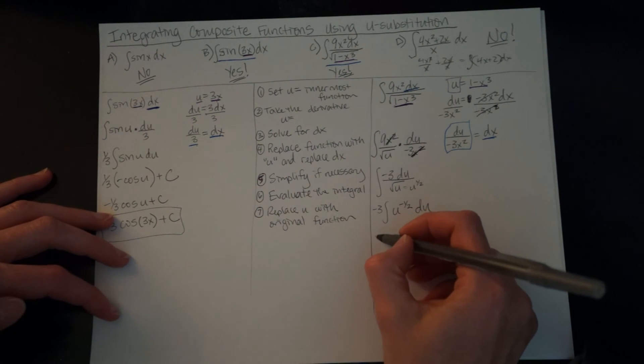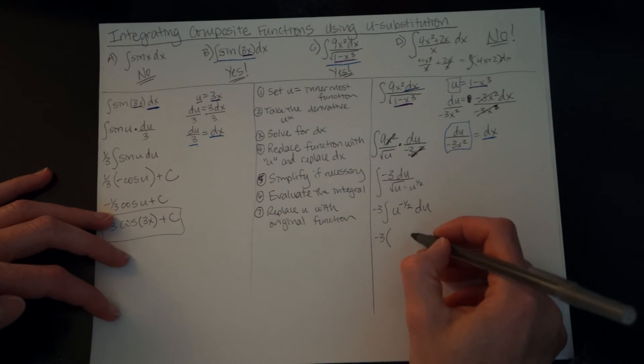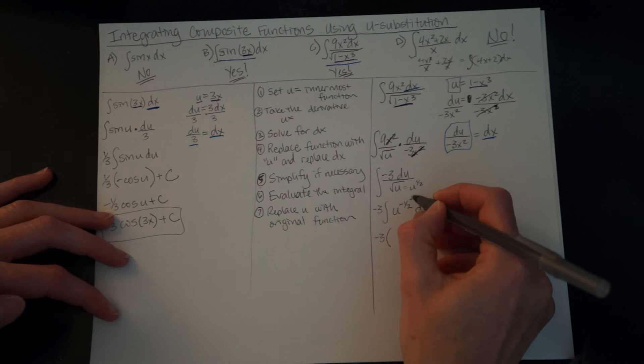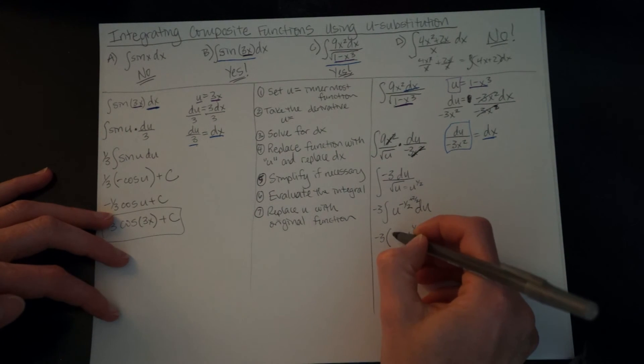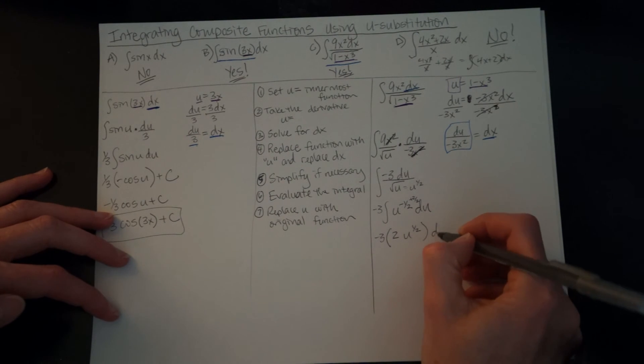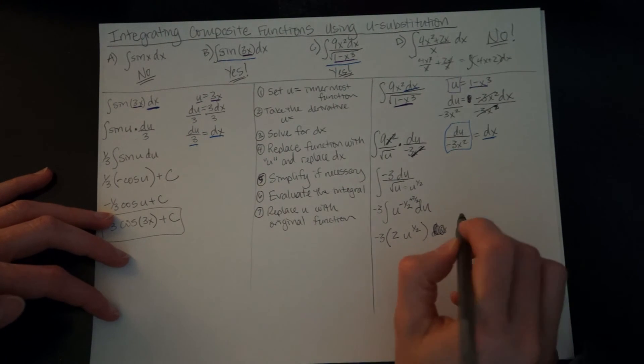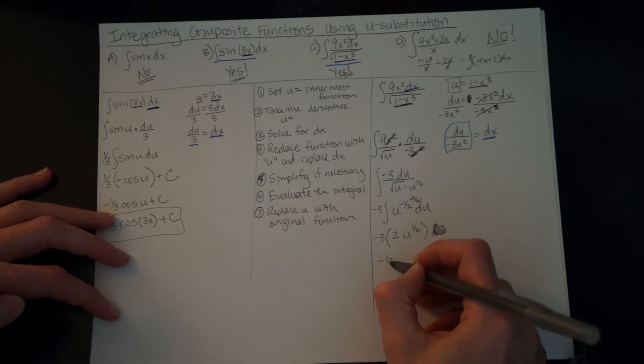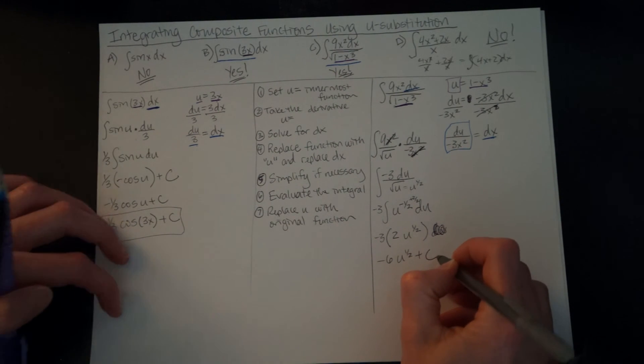Now I need to evaluate the integral. So I've got negative 3. I'm going to drop parentheses here, u. Remember, I'm adding 1 to my exponent. So u to the one half, multiplying by that reciprocal of one half, which is 2 over 1. Sorry, we took the integral. So no more du. So then we've got negative 6u to the one half. Now we have our plus c.